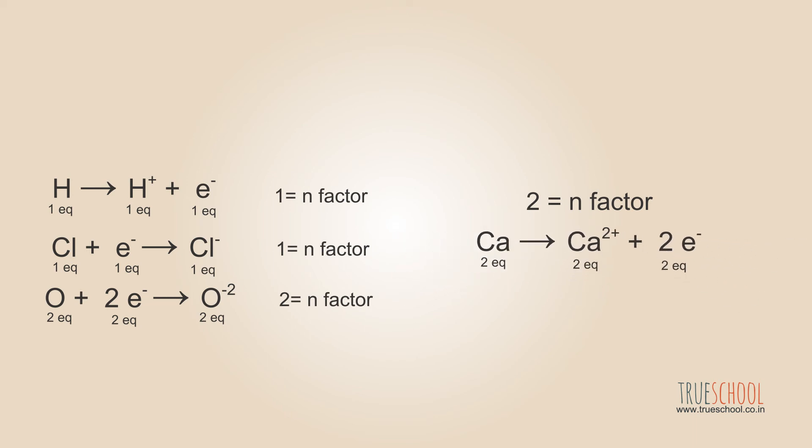Hence, one mole of Ca will react with one mole of oxygen and two moles of chlorine. Let's define equivalents using n-factor. One mole of a species is n-factor times equivalent.